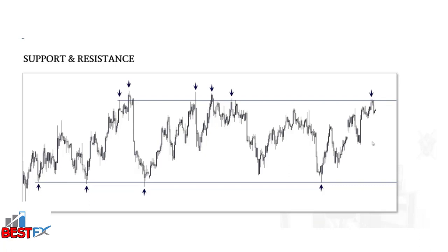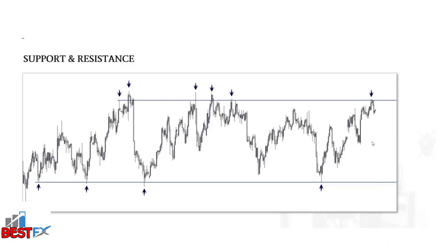Once these areas form and price gets rejected, new traders get interested because they see price stalling and reversing. These new traders also place more limit orders around these areas, which then becomes a self-fulfilling prophecy. Understanding and trading key support and resistance zones correctly is a subject that repeats itself amongst forex traders who are struggling with price action.